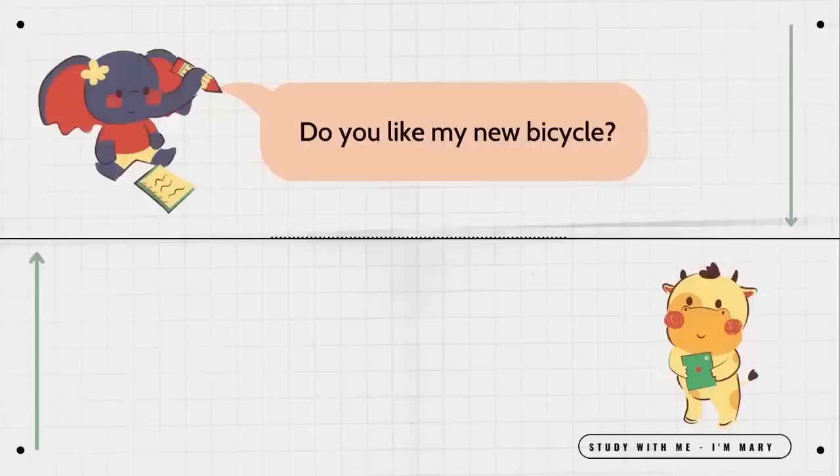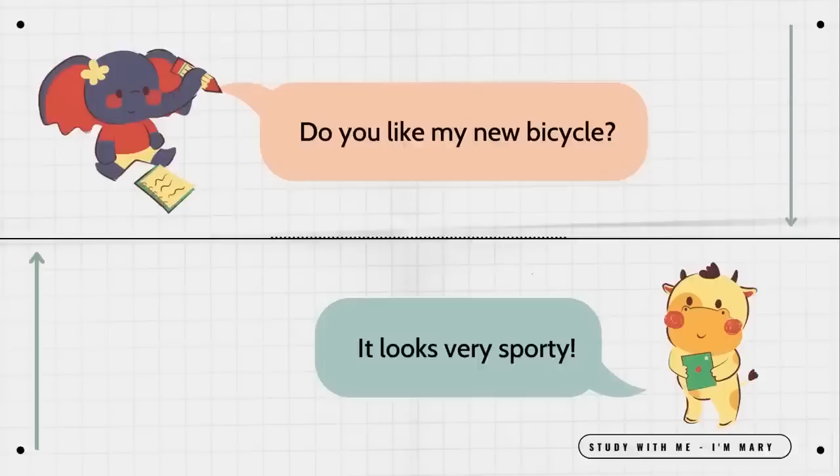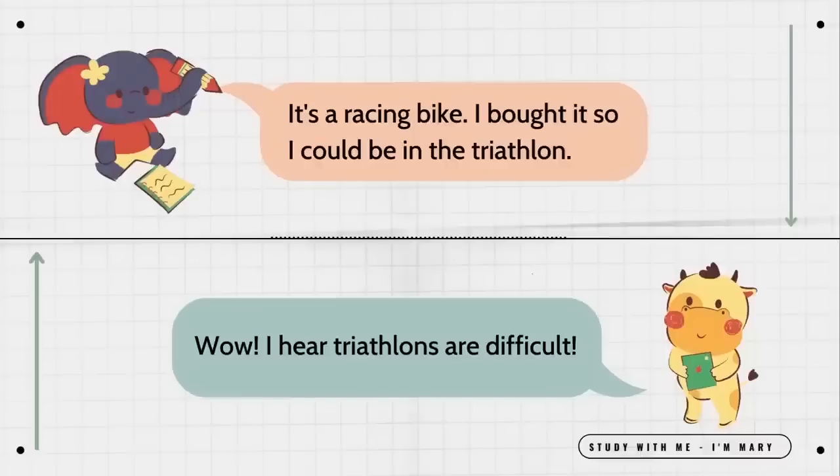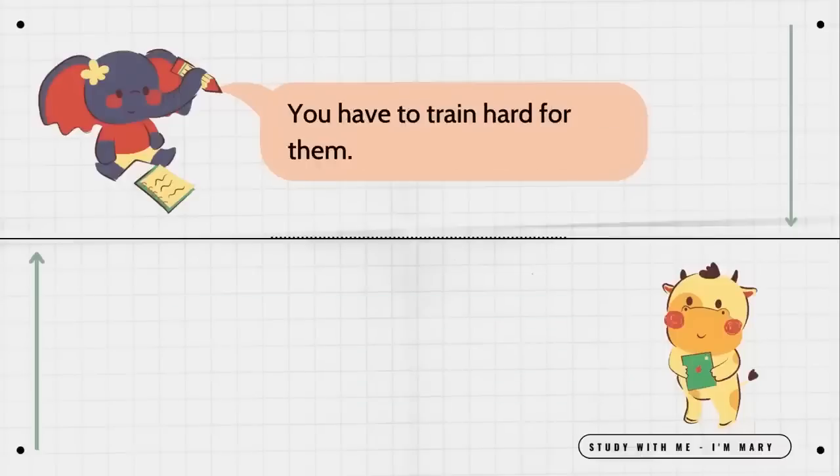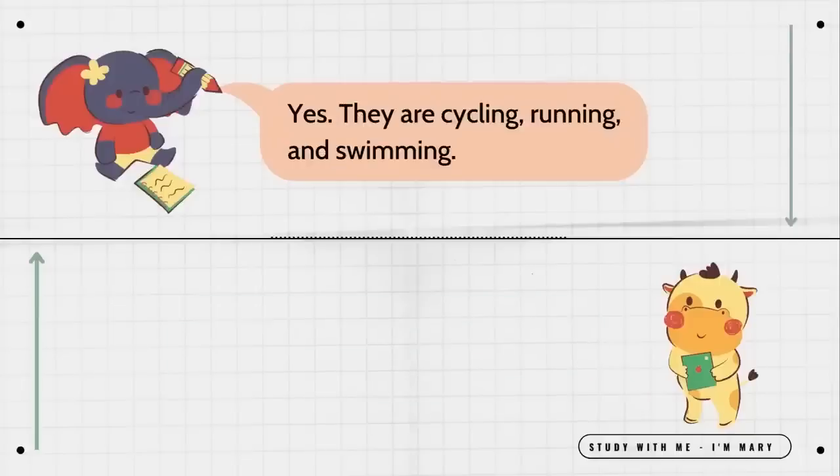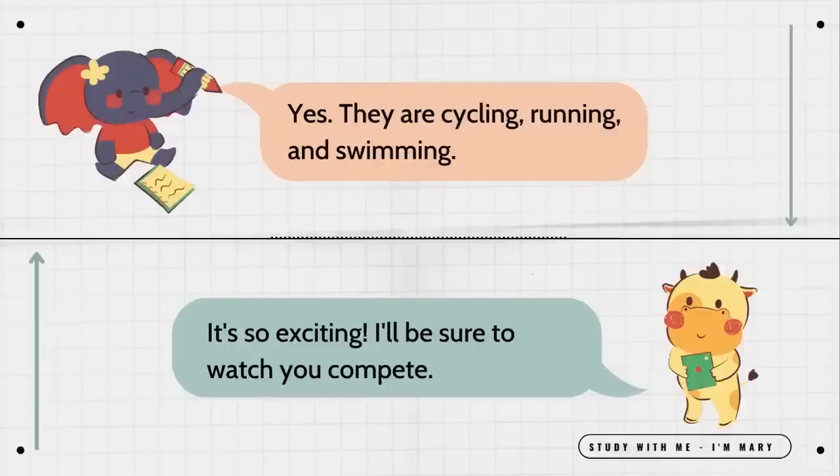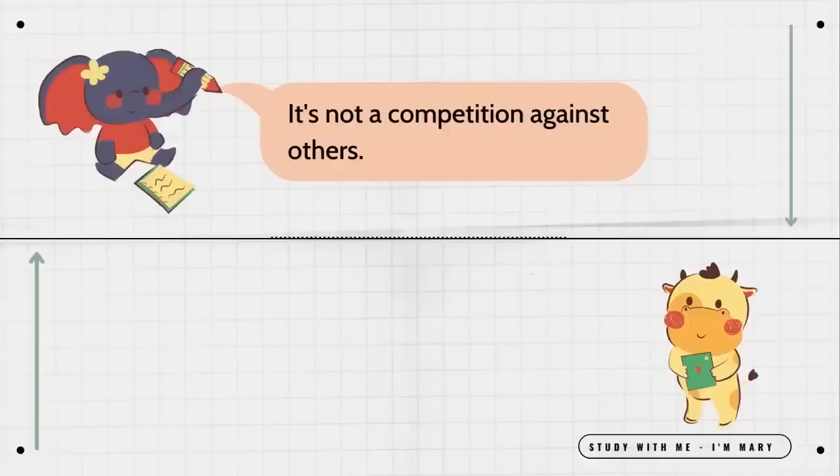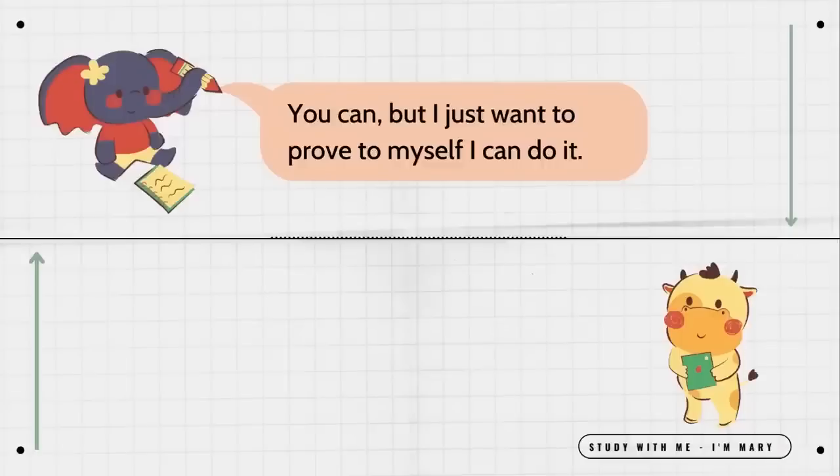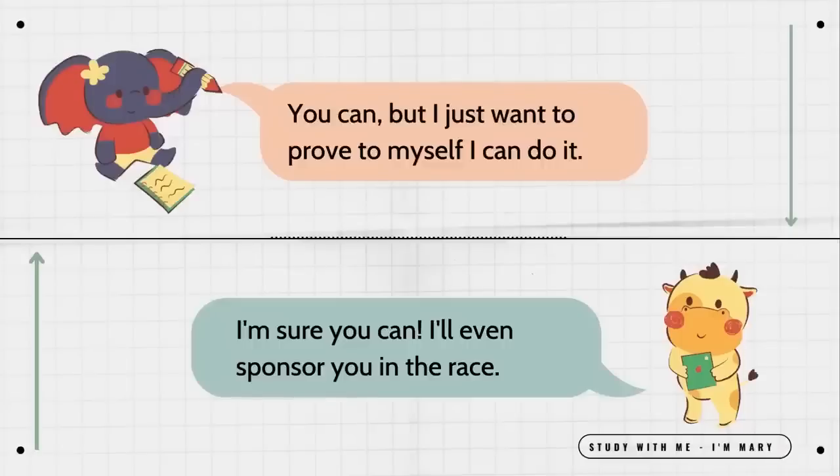Do you like my new bicycle? It looks very sporty. It's a racing bike. I bought it so I could be in the triathlon. Wow, I hear triathlons are difficult. You have to train hard for them. Are triathlons always based on the same three sports? Yes they are. Cycling, running, and swimming. It's so exciting. I'll be sure to watch you compete. It's not a competition against others. It's not? No one can win first place? You can, but I just want to prove to myself I can do it. I'm sure you can. I'll even sponsor you in the race.